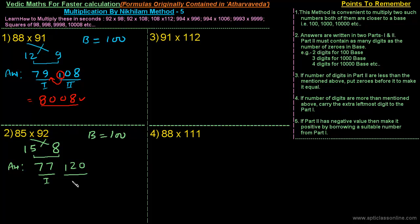Again, part 2 contains more than two digits, so we carry the extra leftmost digit to part 1. The answer becomes 77 plus 1, that is 78, and part 2 becomes 20. The final answer is 7820.